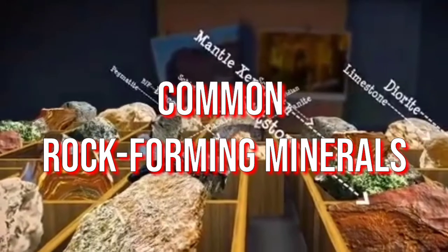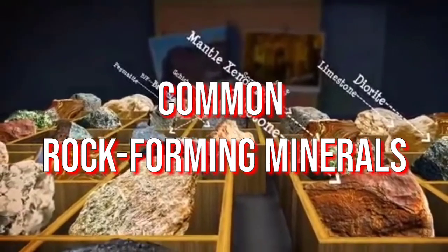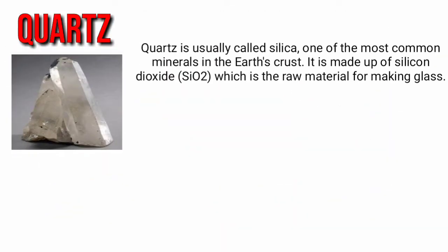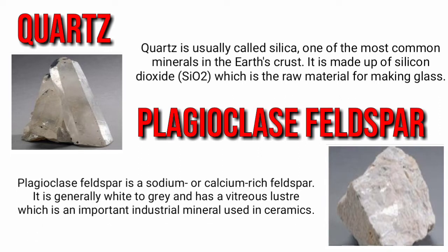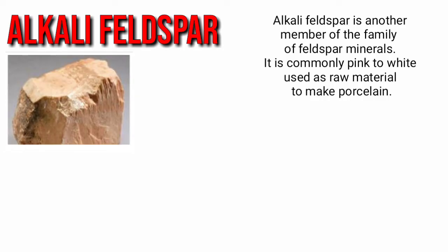Now let's talk about the common rock-forming minerals. First, we have quartz, usually called silica. It is made up of silicon dioxide, which is the raw material for making glass. Next, we have plagioclase feldspar, which is an important industrial mineral used in ceramics. Next, we have alkali feldspar, which is commonly pink to white and used as a raw material to make porcelain.